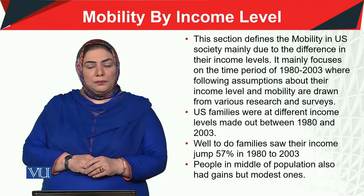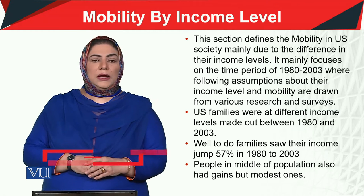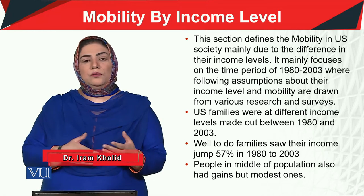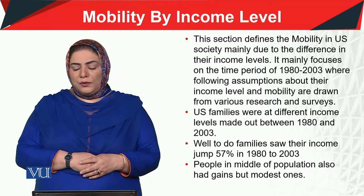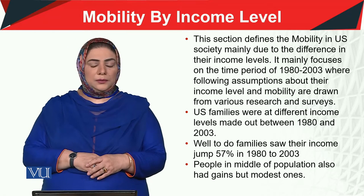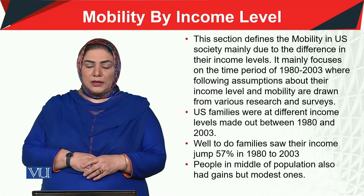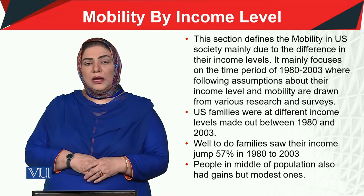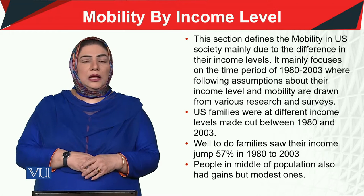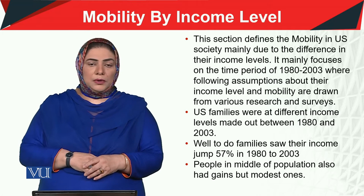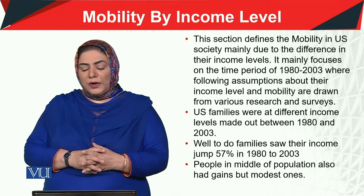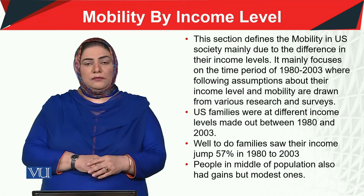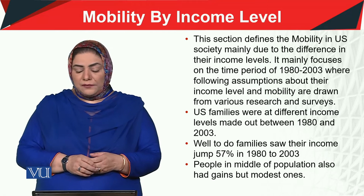There is nothing ideal here — people's incomes vary according to the nature of their job and their work skills. This study mainly focuses on the time period from 1980 to 2003, where some important assumptions are normally practiced and written by researchers. These assumptions deal with what type of income people enjoy and what type of mobility occurs on the basis of their income, in the special context of the U.S. model.